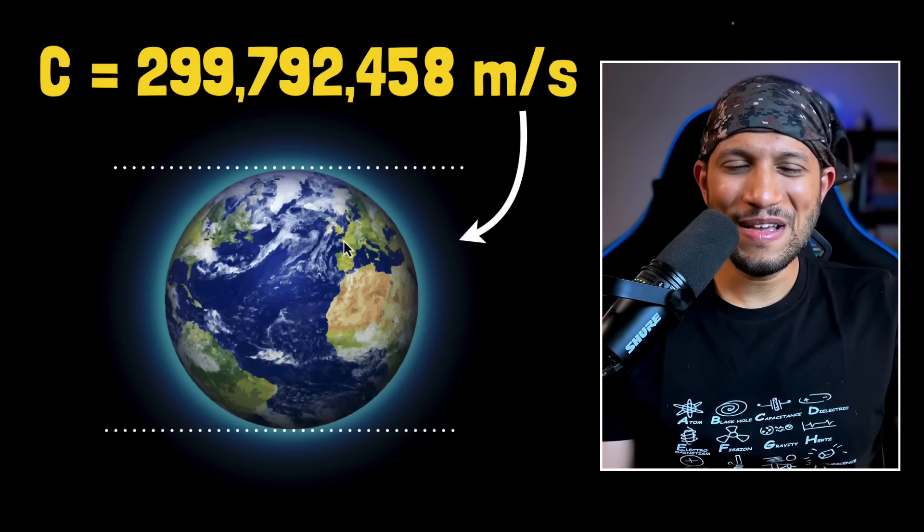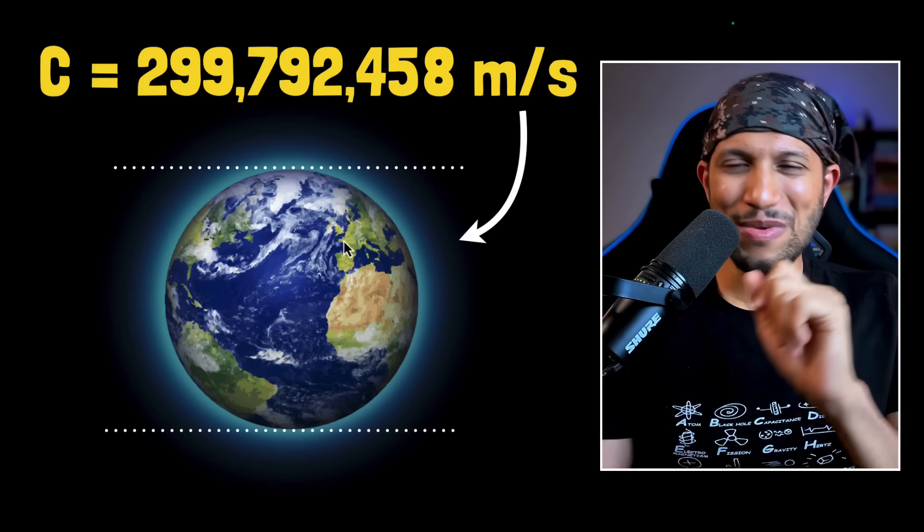Which means the reason why speed of light in vacuum has this specific number is because Earth has this specific size. And I know it sounds preposterous as to why the value of a fundamental constant in the universe has anything to do with the size of the Earth. Well, you don't have to take my word for it. By the end of this video, we would have arrived at this conclusion. I would actually walk you through the series of questions that I thought about and make my thinking process clear. And then you conclude. So if you're excited about this, let's begin.